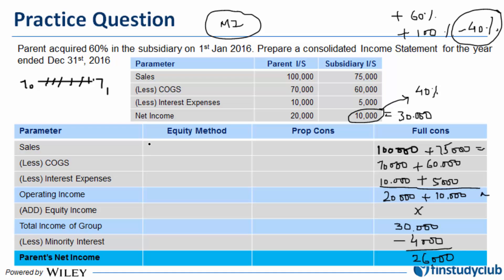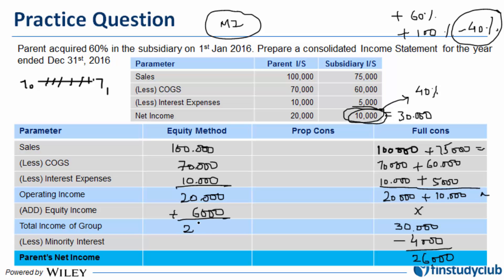Now let's see how this would work under the equity method. In the equity method there is significant influence, and the moment my associate declares profit, I recognize the proportionate profit as equity income — I do not add on a line-by-line basis. So only the parent's income and details appear, plus equity income, which is the proportionate 60% of 10,000, giving 6,000. Nothing goes out as minority interest, and therefore 26,000 is the parent's net income — the same number.